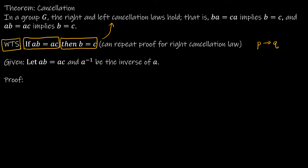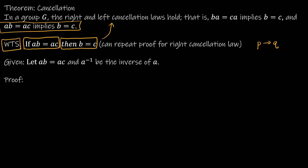We're trying to prove either the right or left cancellation statement. We're going to choose the second one — the left cancellation law. So we're saying if AB equals AC, then B equals C. This one was easy to write the 'what to show' because the theorem statement already gave it to us — it says this implies this. I'm not going to do the right cancellation law, but you can see when we're finished it would be exactly the same, just on the right side.